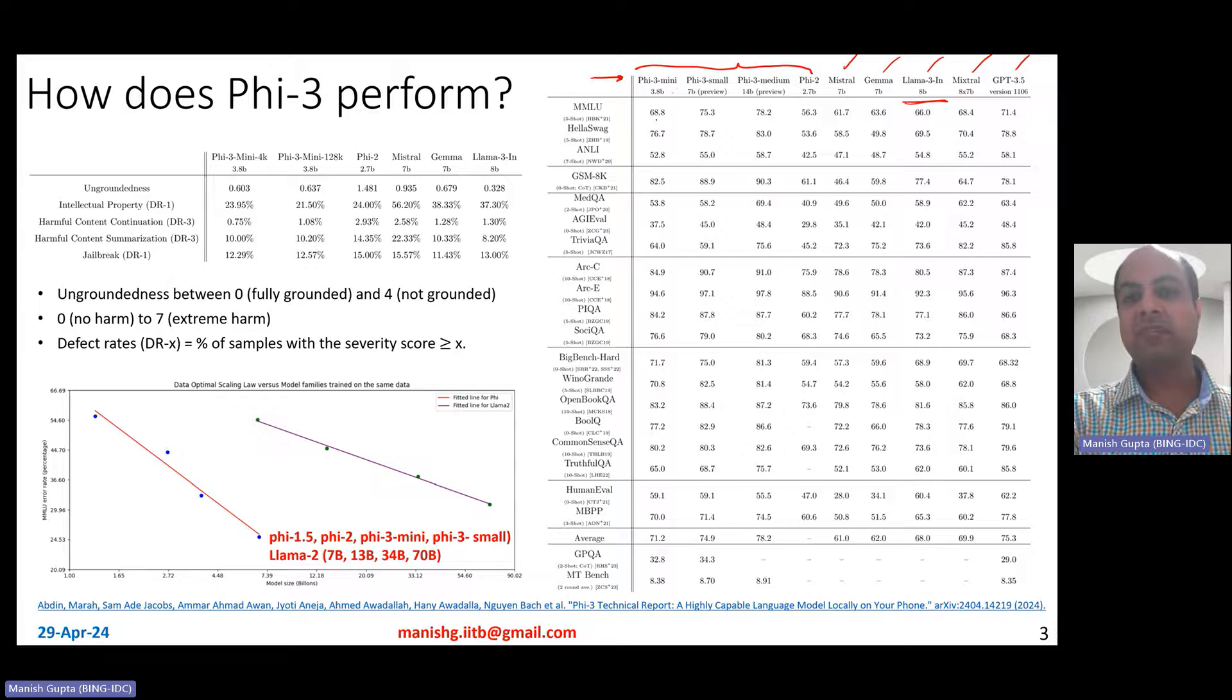Now, if you look at MMLU, Phi-3 mini is 68.8, this is 75.3, 78.2, which is actually better than anything else. In fact, it is better than even GPT-3.5, which is 71.4. So Phi-3 medium is basically state-of-the-art on most tasks. Similarly, if you look at MT-bench, Phi-3 medium is 8.91 versus 8.35 as obtained using GPT-3.5. So really a state-of-the-art model in that sense is the latest that you can actually put your hands on.